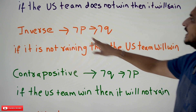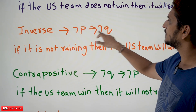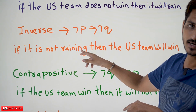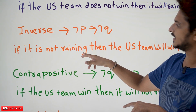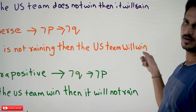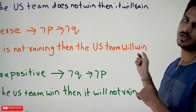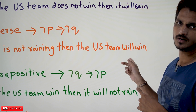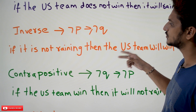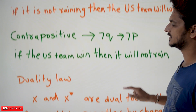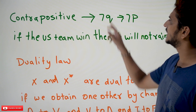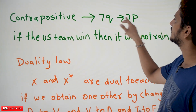If you want to write the inverse, that is negation P implies negation Q: 'If it is not raining, then the US team will win.' Because Q is 'will not win,' so negation Q means 'will win.' This is what we call the inverse of P implies Q.